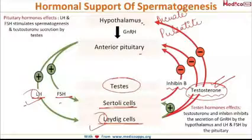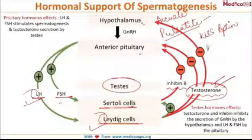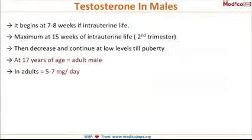Regarding the pulsatility of GnRH: the neurotransmitter involved in GnRH pulsatility is kisspeptin, and the receptor involved is the Kiss1R receptor.